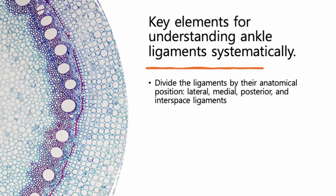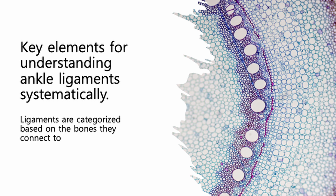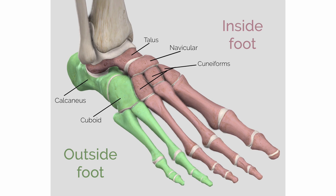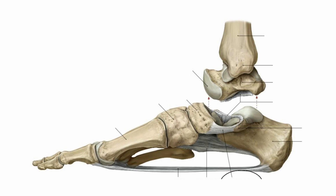First, divide the ligaments by their anatomical position: lateral, medial, posterior, and interspace ligaments. Second, the ligaments are categorized based on the bones they connect to. For the lateral ankle, where the lateral malleolus is a crucial structure, there are four major bones: fibula, talus, calcaneus, and cuboid. The links between them include fibula to talus, fibula to calcaneus, talus to calcaneus, and calcaneus to the cuboid bone. For the medial ankle, the medial malleolus serves as the core landmark, with major bones being the tibia, talus, calcaneus, and navicular bone, with links from the tibia to talus, tibia to calcaneus, tibia to navicular bone, talus to calcaneus, and calcaneus to navicular bone.